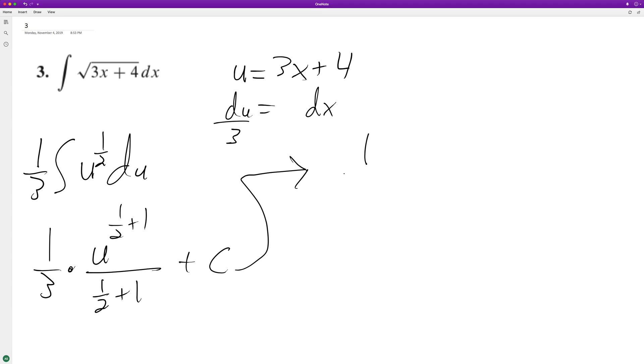So we have 1 3rd u raised to the 3 halves times 3 over 2, which is 9 over 2.